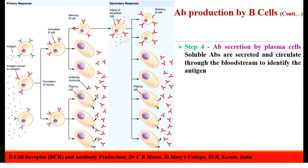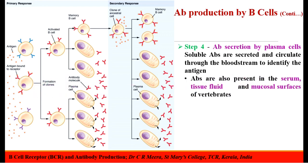The fourth step is the antibody secretion by the plasma cells. Plasma cells will secrete soluble antibodies and these antibodies circulate through the bloodstream to identify the antigen that had induced its synthesis. Such circulating antibodies are also present in the serum, tissue fluid, and mucosal surfaces of vertebrates and are usually called soluble antibodies. Antibody production by the plasma cells mainly takes place during the primary response, that is the response to the first infection by a particular pathogen.